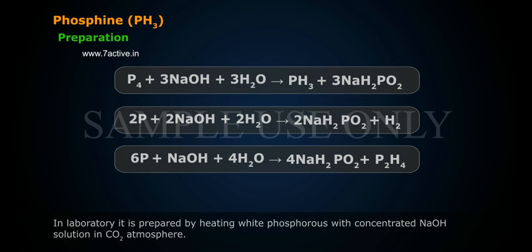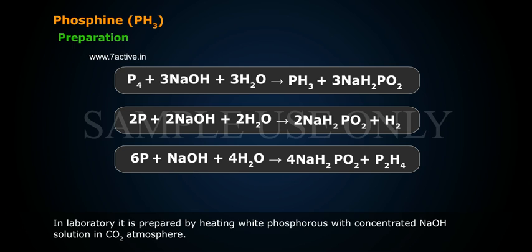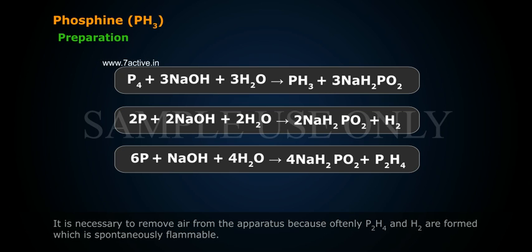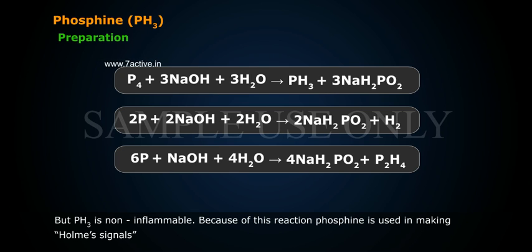In the laboratory, it is prepared by heating white phosphorus with concentrated NaOH solution in a CO2 atmosphere. It is necessary to remove air from the apparatus because P2H4 and H2, which are often formed, are spontaneously flammable. But PH3 itself is non-inflammable.